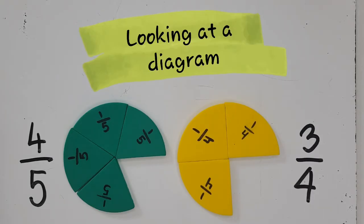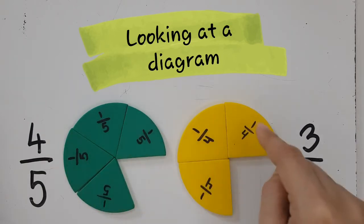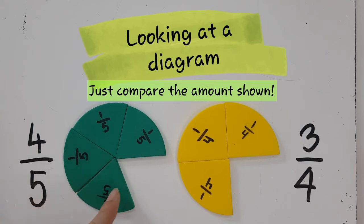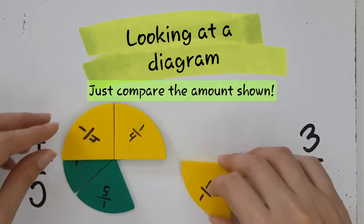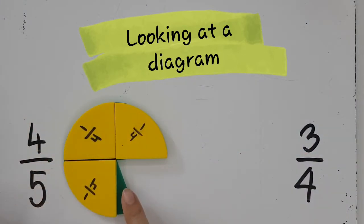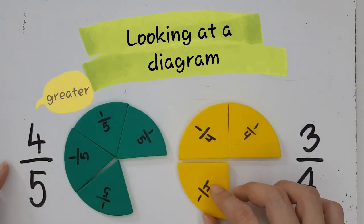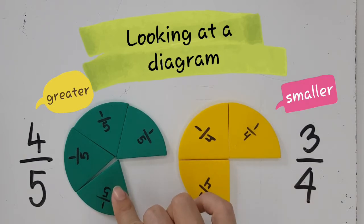The first method to compare fractions is to look at diagrams. In this question, we have three-fourths and four-fifths. If you are given a picture or a diagram showing the fractions, all you need to do is look at the amount and compare it. You need to imagine putting them one on top of each other and see which one is more. As you can see, the green one is more. So four-fifths is more than three-fourths, and three-fourths is less than four-fifths.